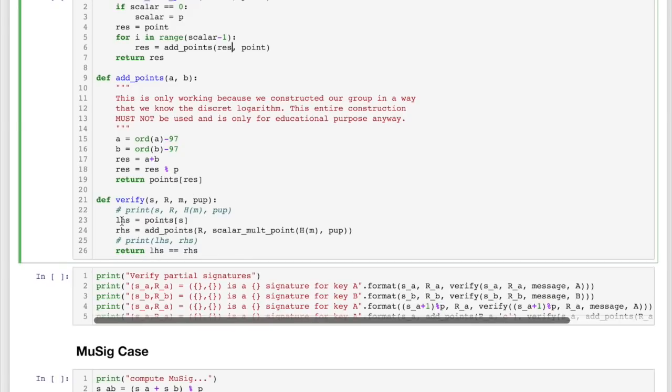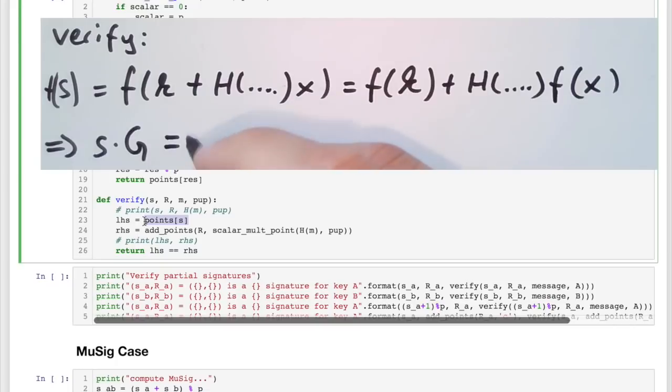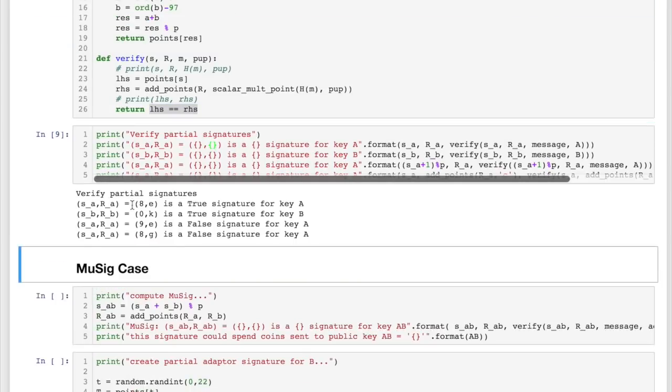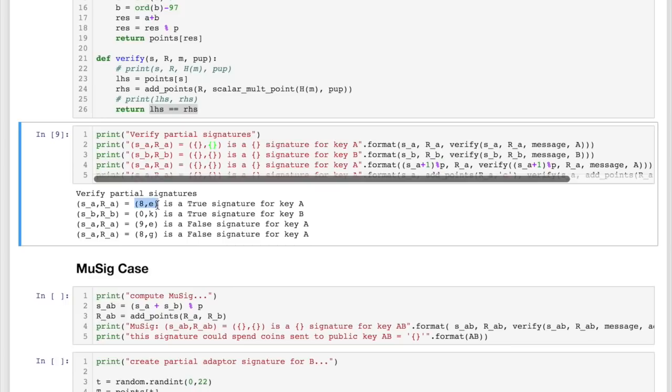And then we can use this to verify a signature. Remember that we take S times G, which is just like mapping S to the point space. For the left-hand side of our equation and for the right-hand side of the equation, we have to add some points, which is first the point R. Then we have to add basically our public key multiplied with the hash of the message. So this is a scalar multiplication. The result is a point again. So we can add this point to R. And to verify the signature, we just check if the left-hand side is the same as the right-hand side. So what we see is that for our key A, the signature on the message that we defined looks like 8,e. And this is a true signature. And for our key B, which was a different key, our signature changed a lot. If we, for example, would modify our signature a little bit, let's say that for the signature we add 1 to the S value, then the verification says it's a false signature. And if we change the R value, then also it tells us that this is a false signature.